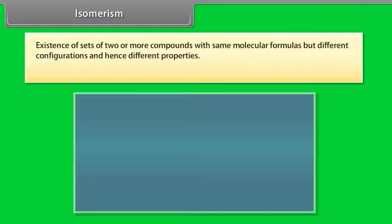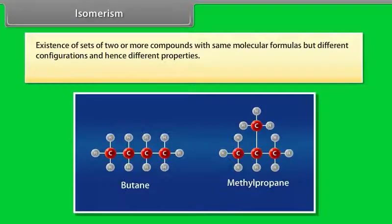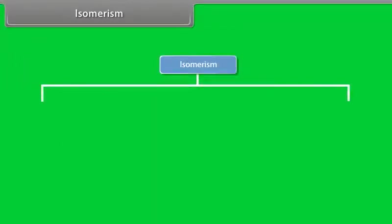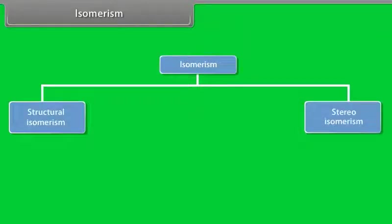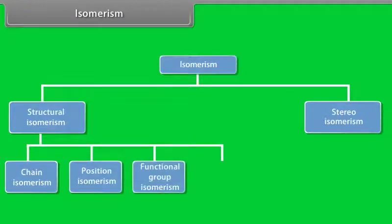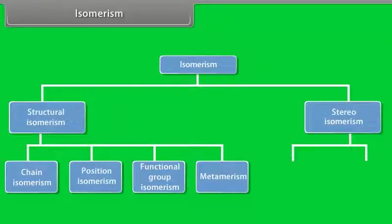Isomerism is the existence of two or more compounds with the same molecular formulas but different configurations and hence different properties — the compounds are called isomers. Isomerism can be grouped into structural and stereo-isomerism. Structural isomerism is subdivided into chain isomerism, position isomerism, functional isomerism, and meta-isomerism. Stereo-isomerism is further categorized into geometrical and optical isomerism.